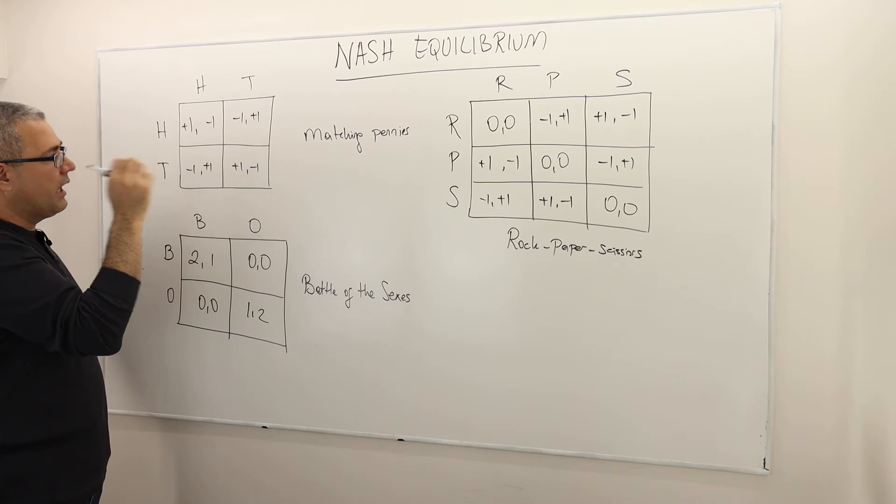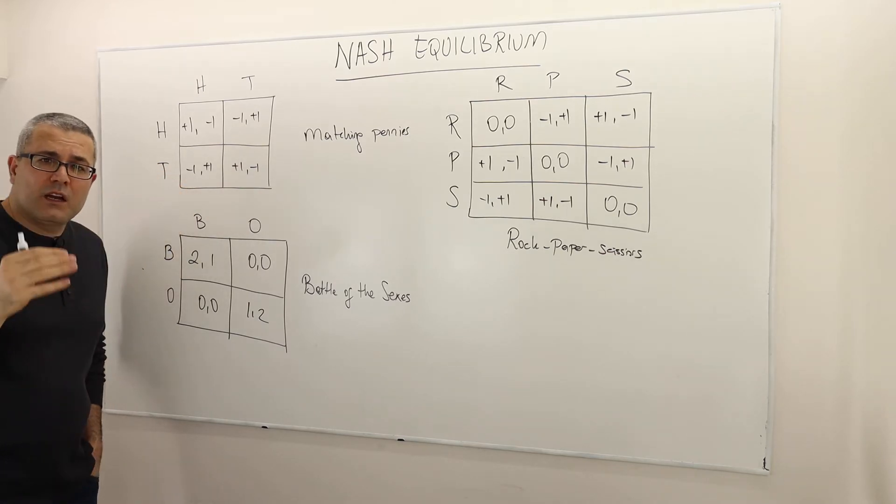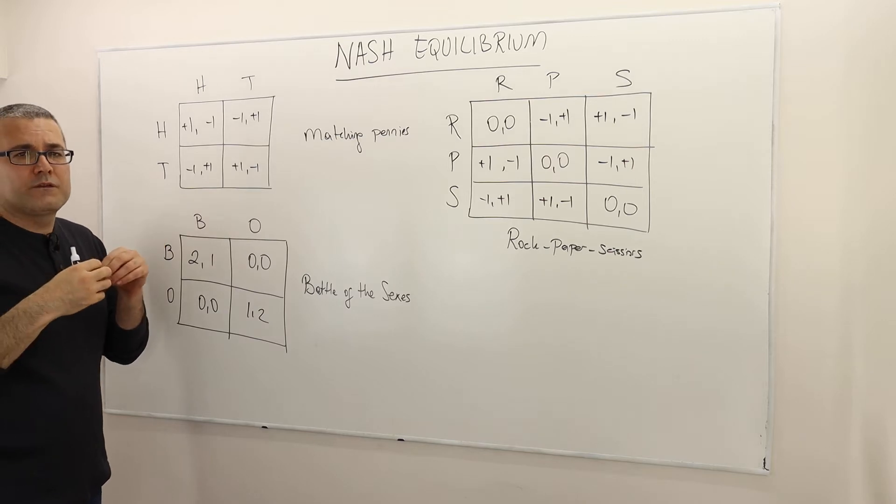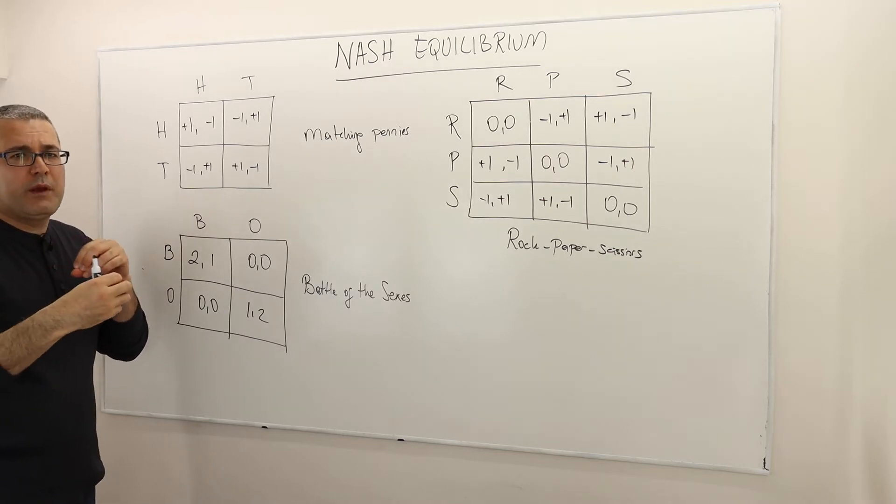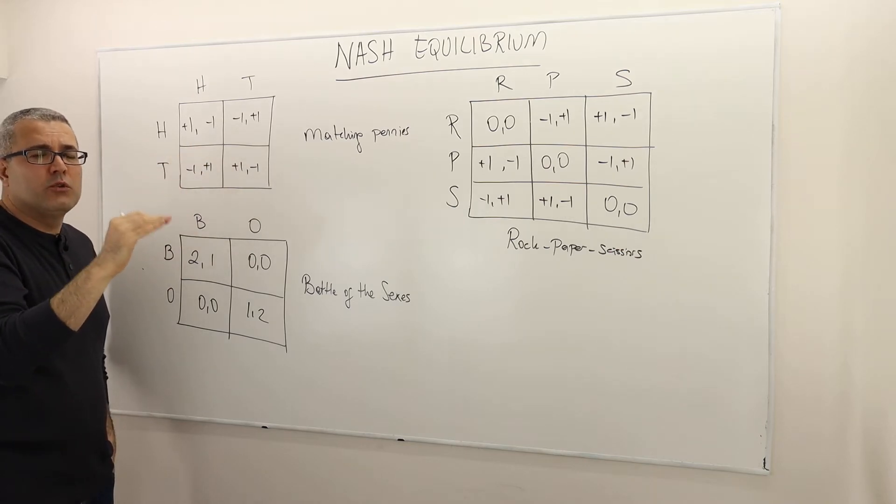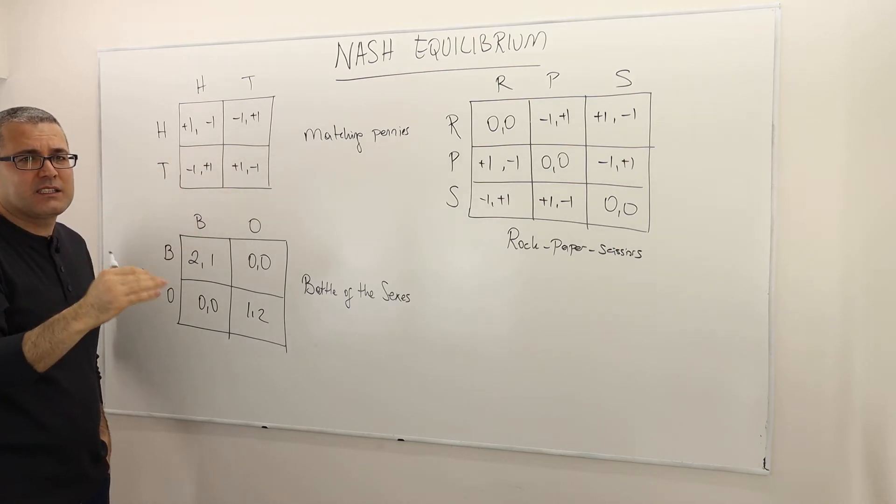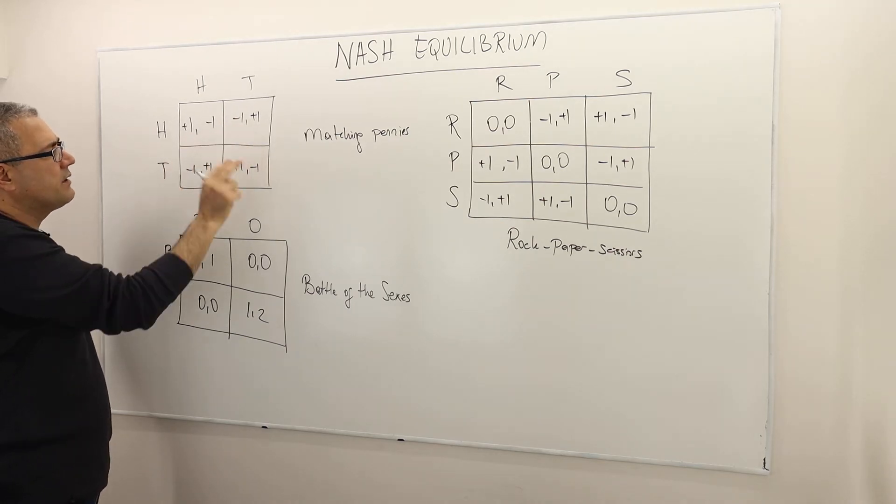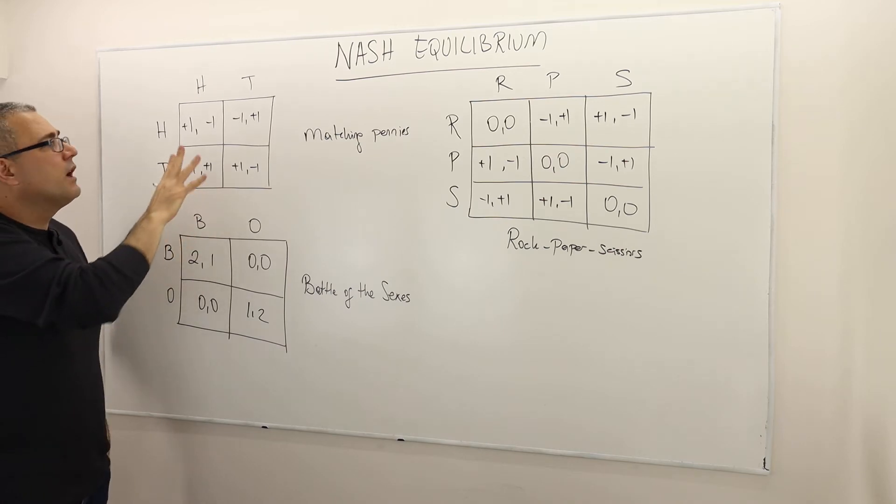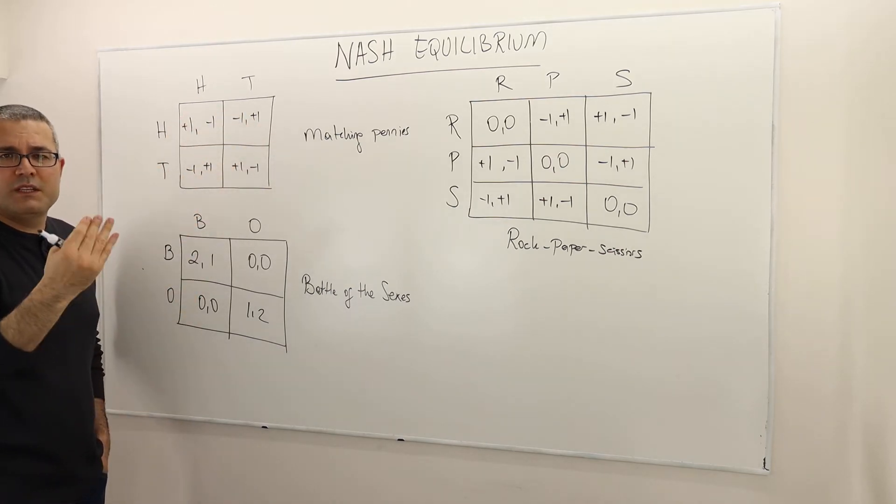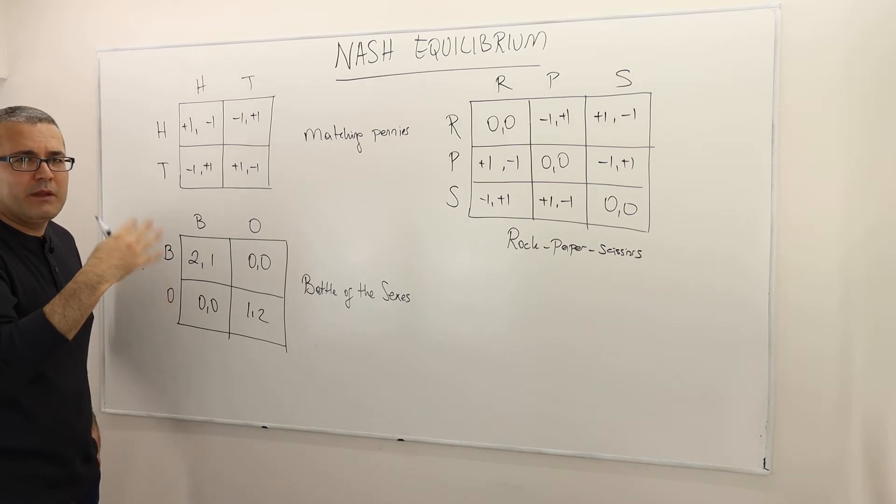All right. So this is a zero sum game. The reason is a zero sum game is a game where the player's payoffs, when you sum all these payoffs at every strategy profile, the sum has to be equal to a constant, the same constant C. And here, for example, when you sum the payoffs, this is zero. The sum here is zero. The sum here is zero.